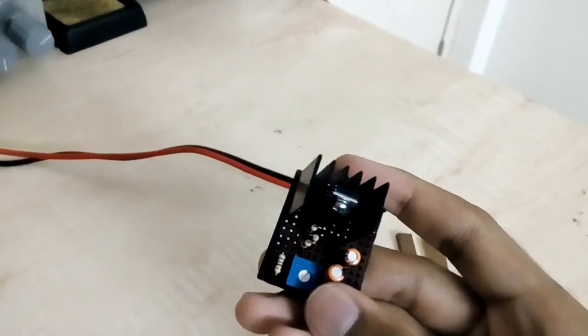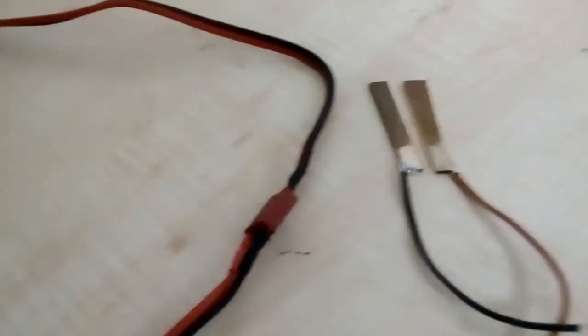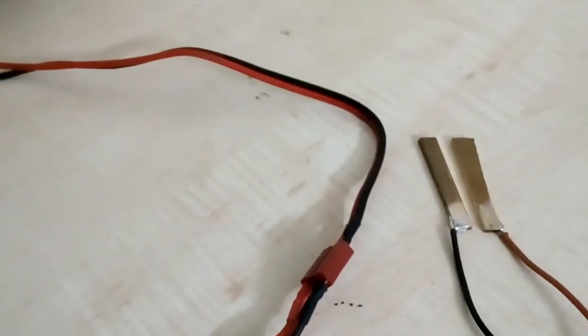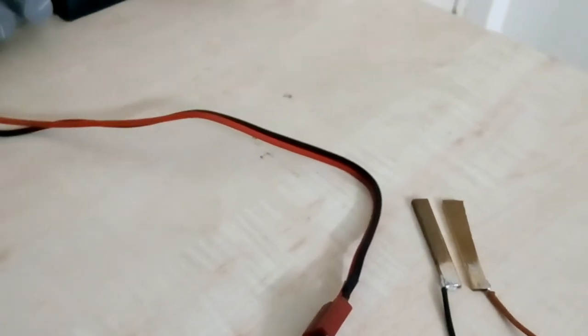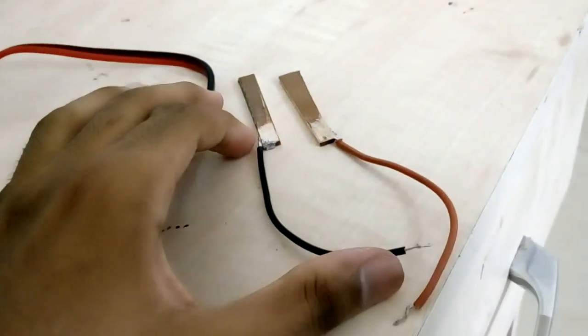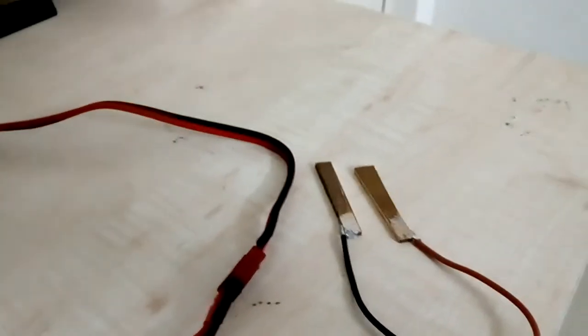100 milliamps constant current output. So you can measure the voltage drop across stuff. So every millivolt you measure is 10 milliohms. So I got 0.9 millivolts for this wire. So that's around 9 milliohms.